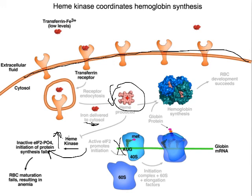The ultimate outcome is we get very low levels of hemoglobin being synthesized, and red blood cell development doesn't succeed — we end up with red blood cells that don't have the normal level of heme in them. Hopefully that makes more sense than how I tried to explain it in class. That's the story of how we can match the level of globin synthesis with the amount of heme that we produce.